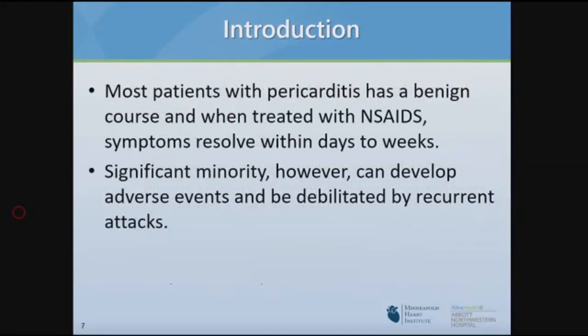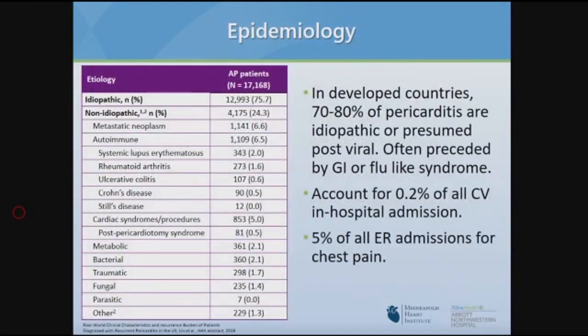Most patients with pericarditis have a very benign course. When treated with NSAIDs, symptoms resolve within days to two weeks. A significant minority, however, can develop recurrence. In modern literature from developed countries, about 70 to 80 percent of pericarditis cases are idiopathic, most often preceded by some type of viral prodrome — flu, upper respiratory, or GI-like illness. About five percent of ER admissions are secondary to pericarditis. Querying the Optum Insurance database found about 76 percent are idiopathic, consistent with the literature.